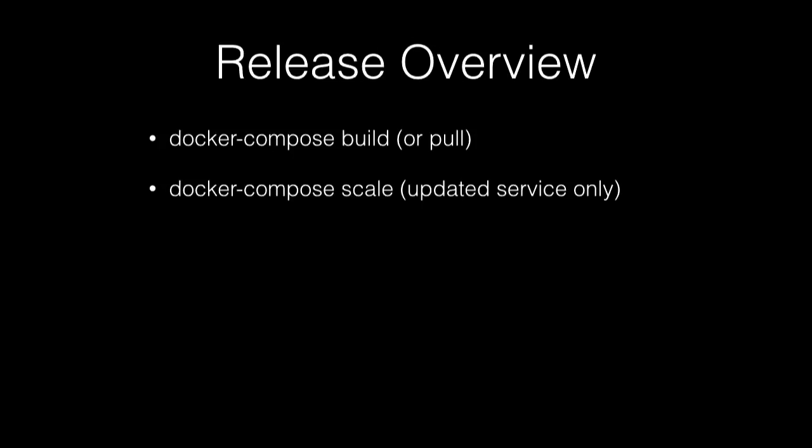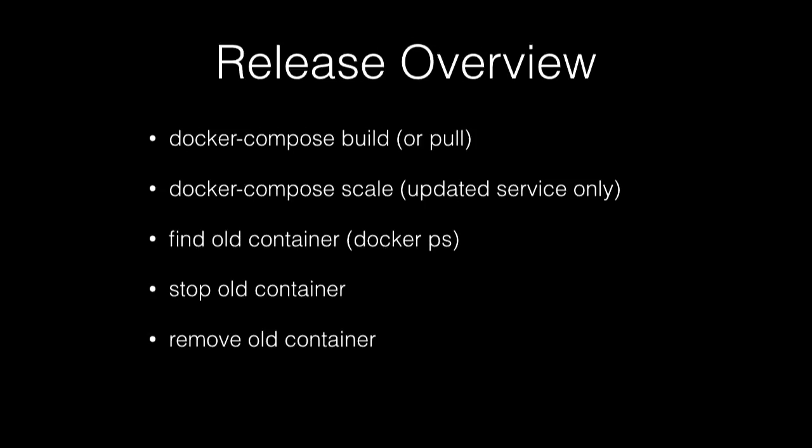The last thing we need to talk about is what it looks like when you release. If you change the code and rebuild, your old container dies, your new container comes up, and you just made downtime. For a zero-downtime deployment: build or pull to get your new image, then scale up — you now have old and new containers running. Find the old container using docker ps, stop that container, and remove it. Then scale back down. Magically, when you stop the old container, the round-robin load balancing means Nginx now only sees the IP address of the new container. You had a short period where Nginx saw both; kill the old one and you can move on with life.